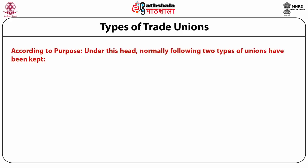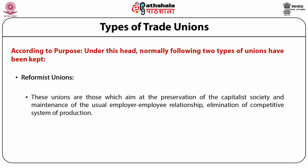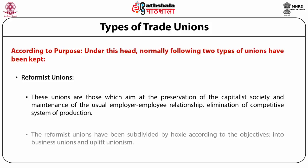Types of trade unions according to purpose. Under this head, normally fallen types of trade unions have been kept. First, reformist unions. These unions are those which aim at the preservation of the capitalist society and maintenance of the usual employer-employee relationship and elimination of the competitive system of production. The reformist union has been subdivided by Hoxie according to objectives into business unions and uplift unionism.